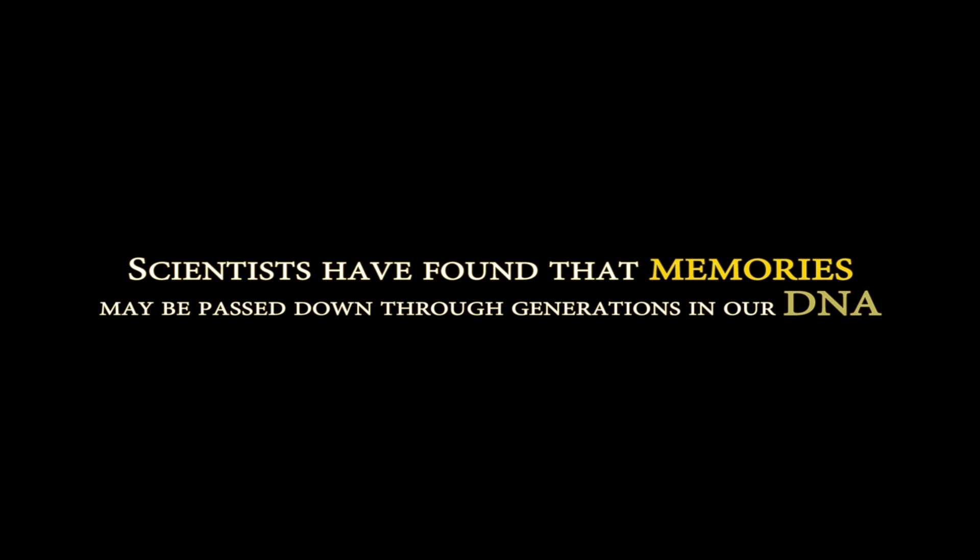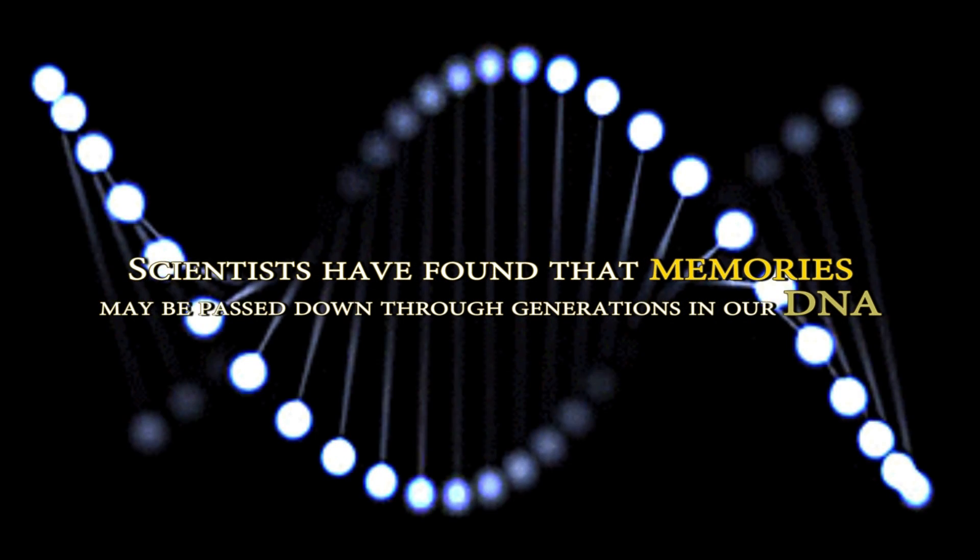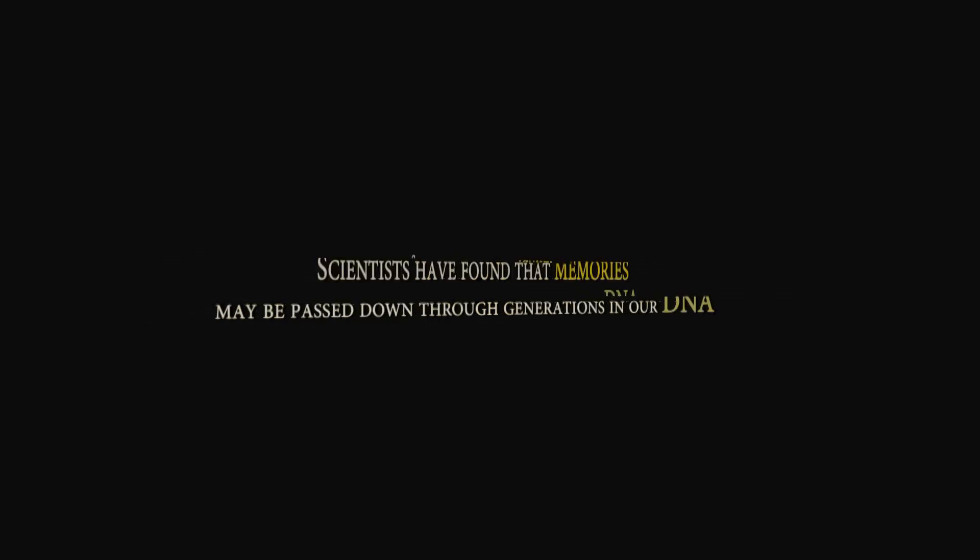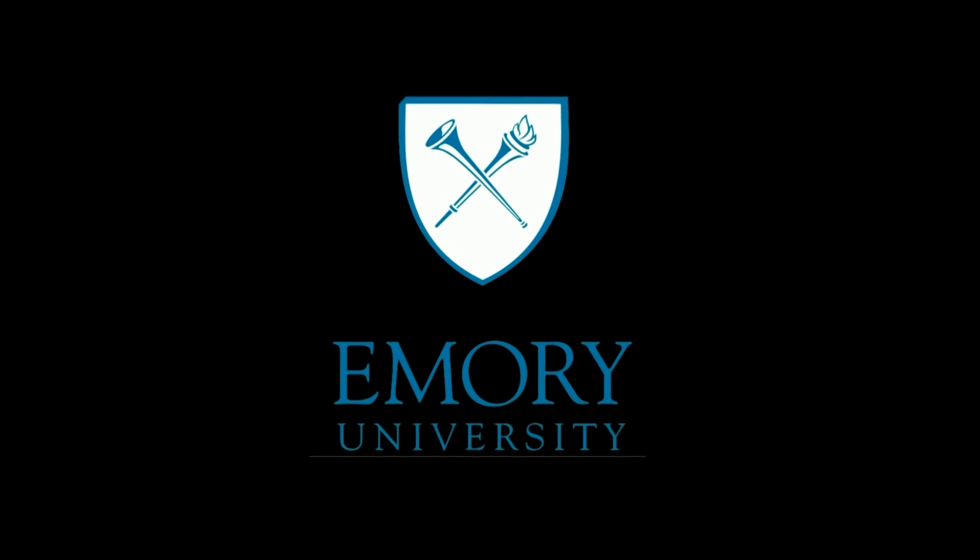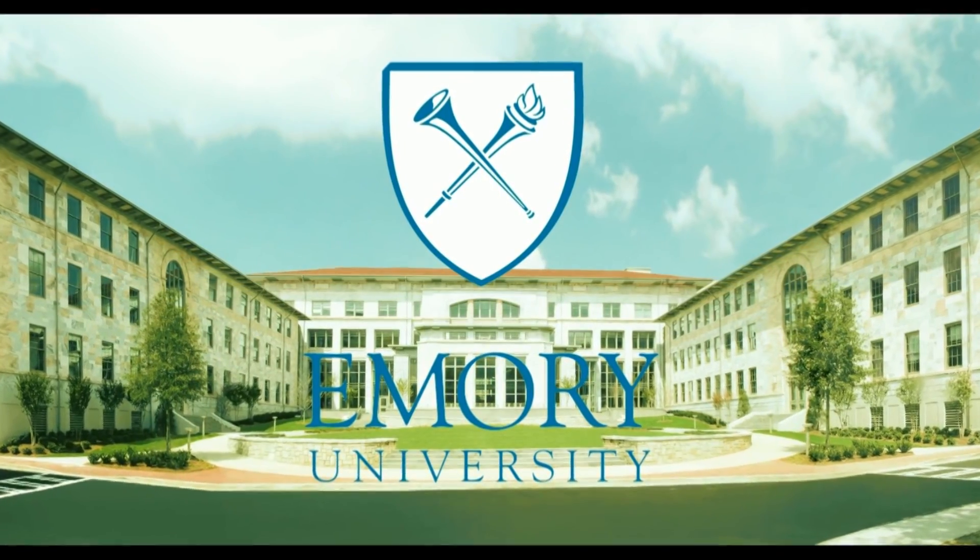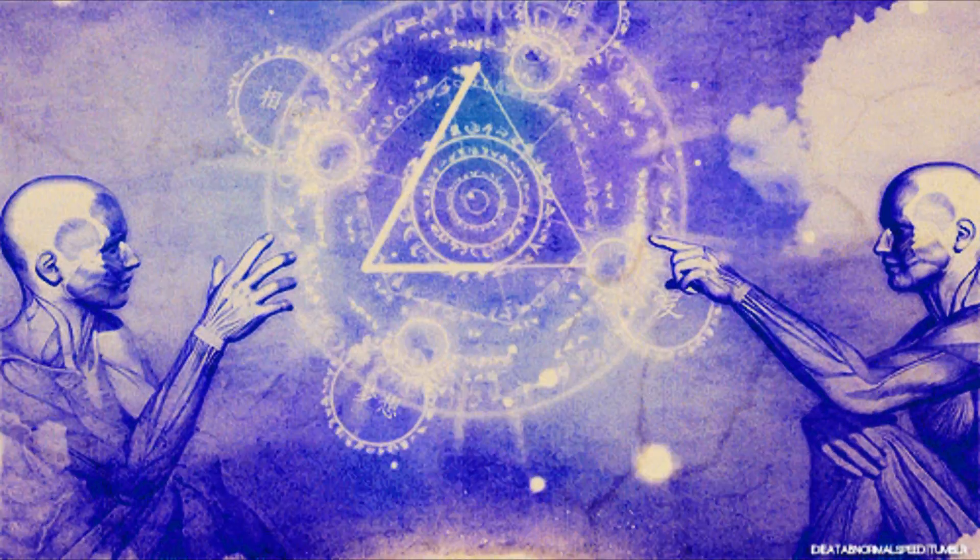Scientists have found that memories may be passed down through generations in our DNA. Research from Emory University School of Medicine in Atlanta has shown that it is possible for some information to be inherited biologically through chemical changes that occur in our DNA.